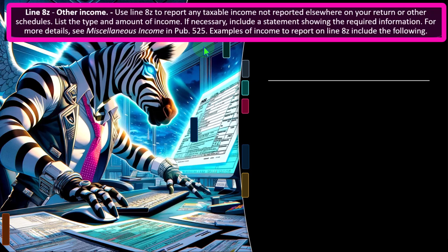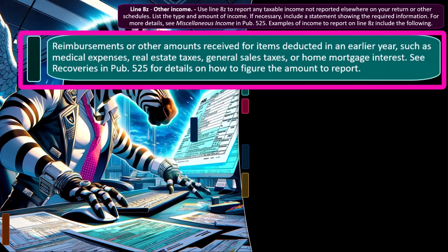Examples of income to report on Line 8Z include: reimbursements or other amounts received for items deducted in an earlier year, such as medical expenses, real estate taxes, general sales tax, or mortgage interest. For example, if you overpaid state tax, got a deduction, then received a refund the following year, rather than amending the prior year return, you include the refund amount in income in the current year. Similar logic applies to other types of refunds where you got a tax benefit last year.